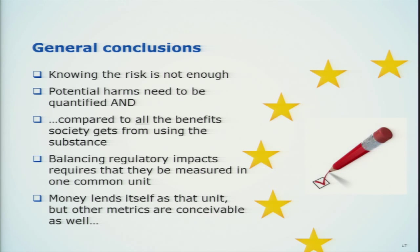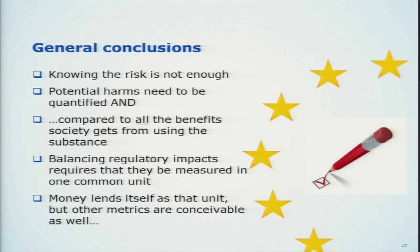My take-home message is that knowing about the risk is not enough. The potential harms need to be quantified and compared to the benefits that society gets from using a substance. Balancing regulatory impacts requires, or is at least simplified by, having a common unit, and money is a suitable unit for that. But you could also conceive of other metrics and other ways of evaluating proportionality — those are challenges to the scientific community. Multi-criteria decision making is also mentioned in our guidance, but it hasn't been applied yet in any of the dossiers we have handled.